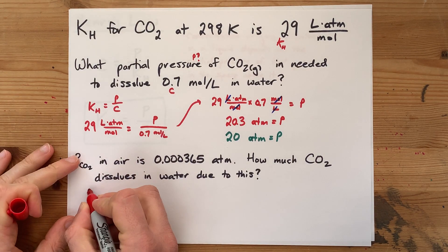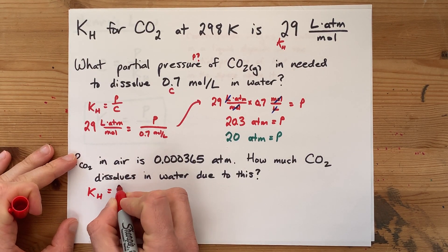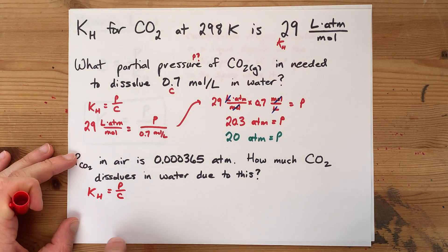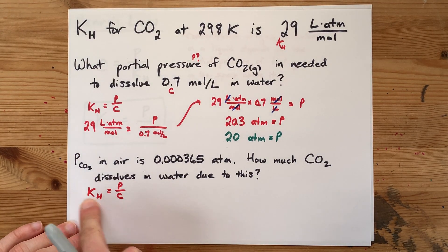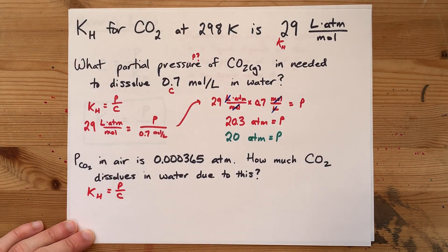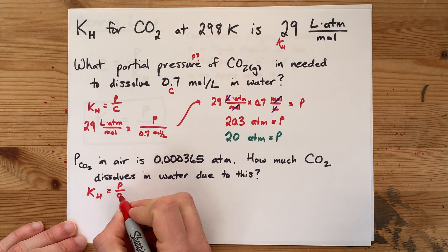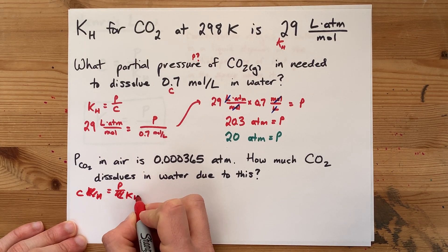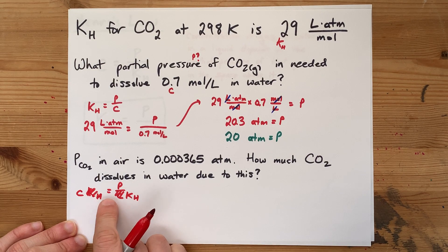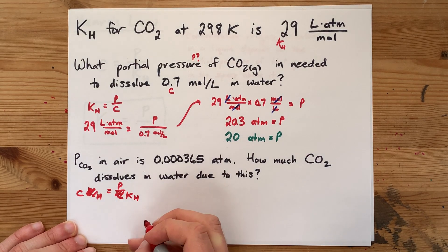Well, let's find out. The equation is KH equals P over C, and here we're solving for C. Now I'm going to rearrange this right in front of you to give you the equation that I showed you earlier. Multiply both sides by C and divide both sides by KH. Concentration is pressure divided by KH.